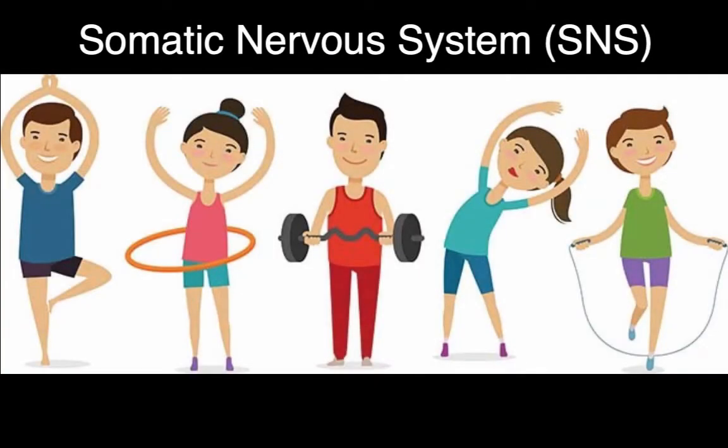The central nervous system will determine the correct response for the stimulus. This can require conscious thought or no conscious thought. Voluntary movement that is under a person's conscious control, such as walking, talking, throwing, and playing, belong to the somatic nervous system, SNS. These would be called somatic responses.